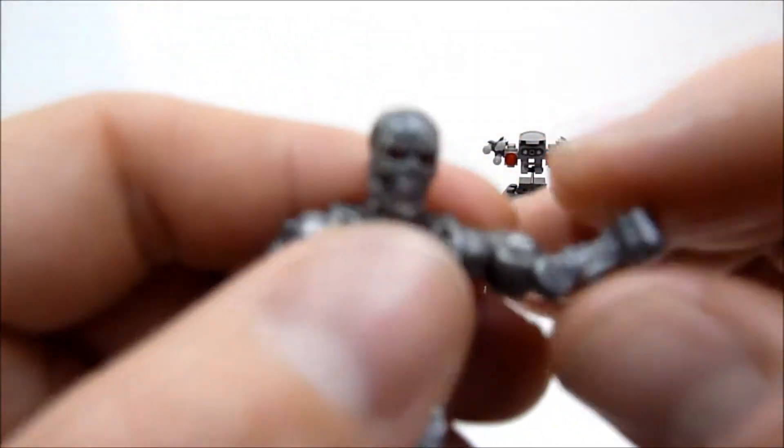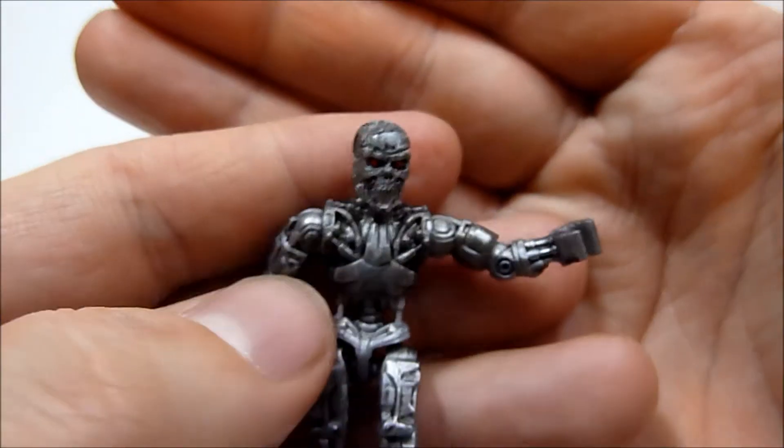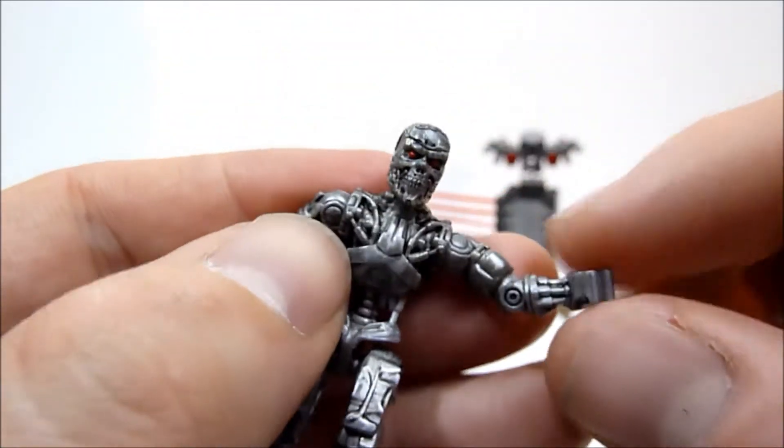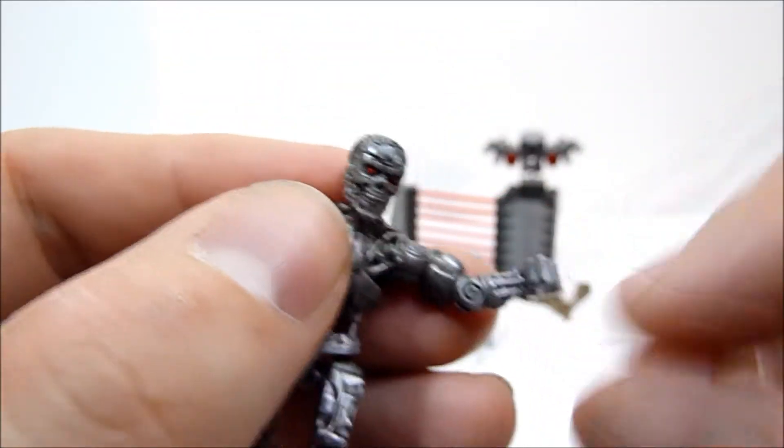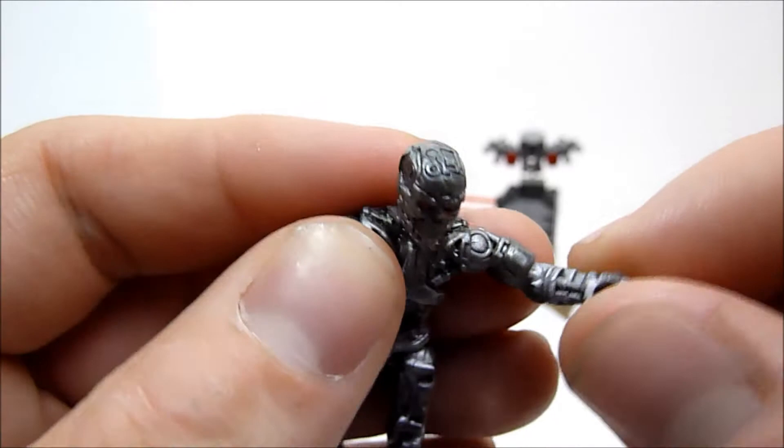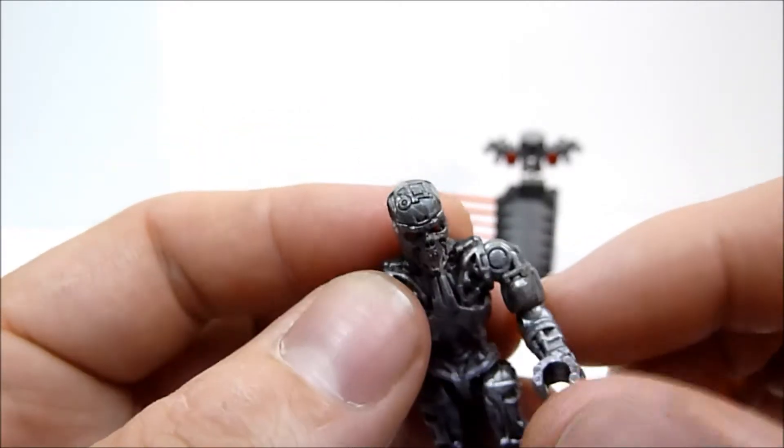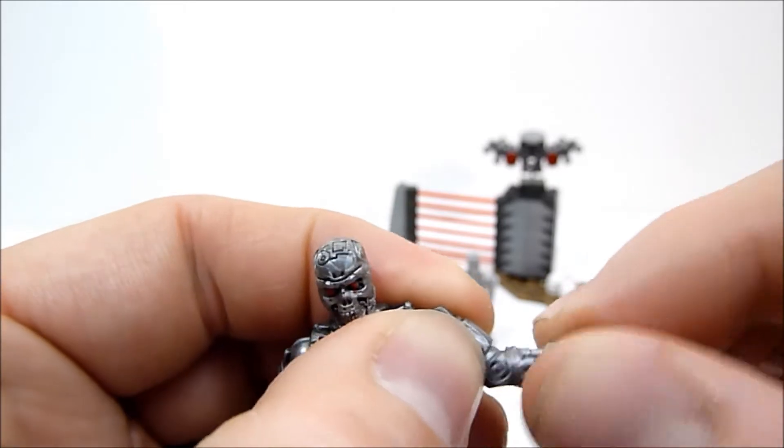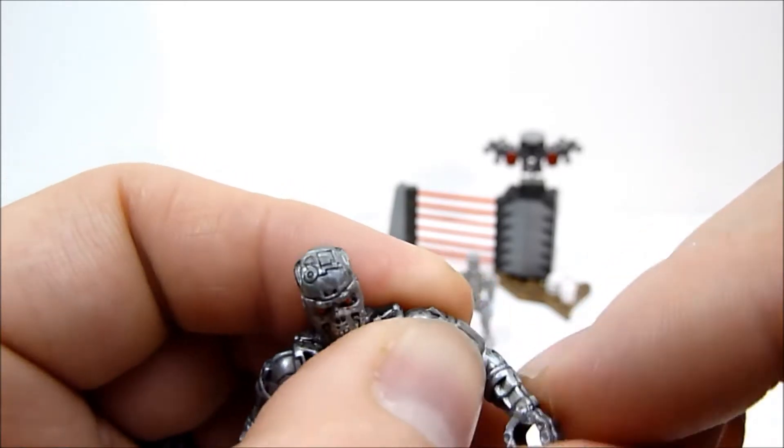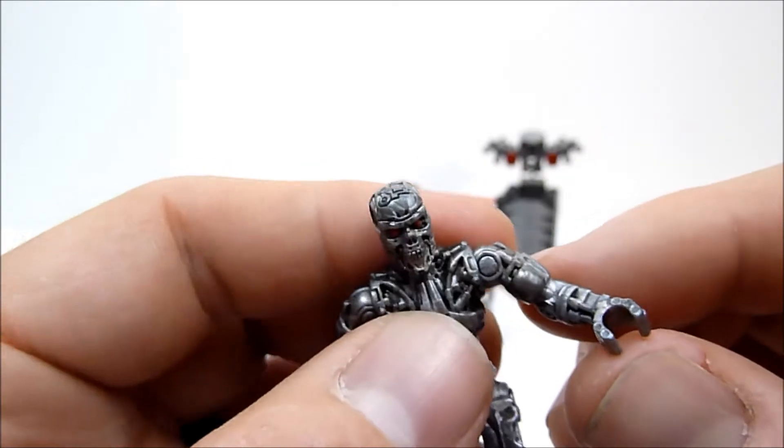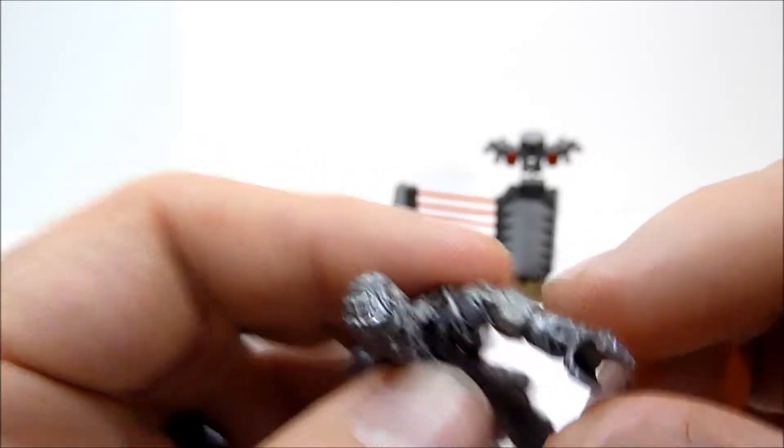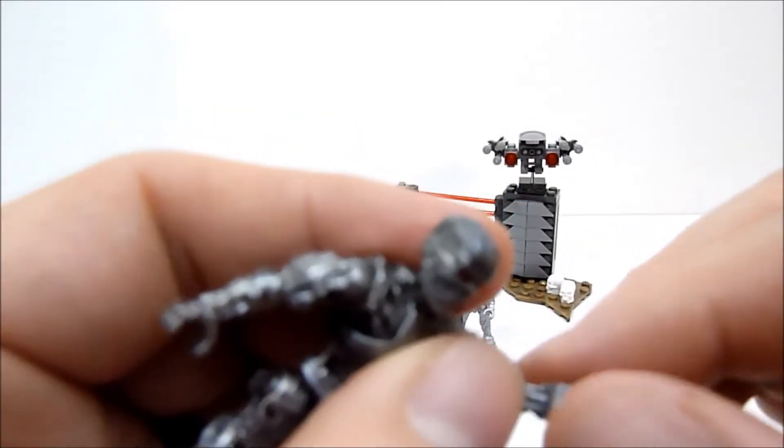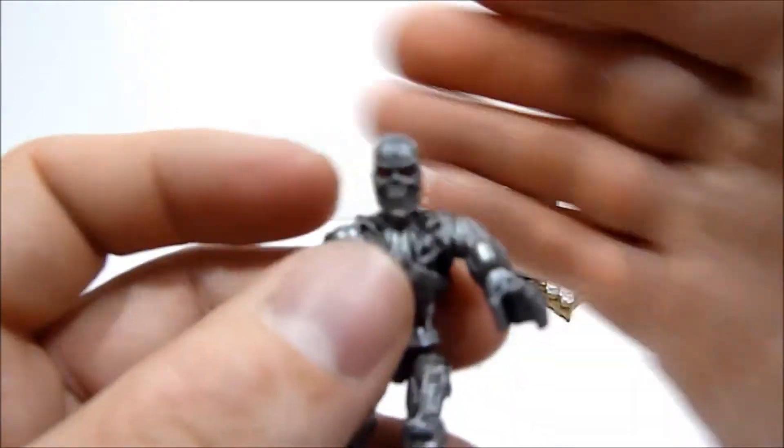Unfortunately, and I've mentioned this in the Time Machine review, but if you haven't seen that, the most unfortunate thing about these figures is that they have no elbow joint. It looks like it's sculpted in there and it looks like it totally could be in there, but they just don't have it. They do have a swivel here at the elbow, but unfortunately that's all you get. They do have no wrist swivel either.